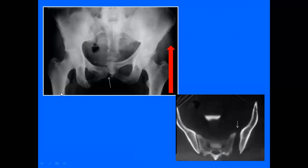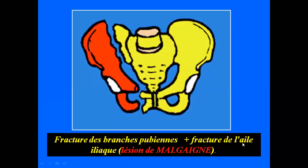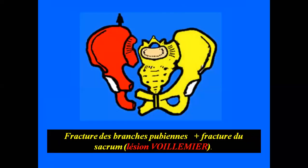Sur cette radiographie et ce scanner, on voit en avant la disjonction de la symphyse pubienne, les deux bords n'étant plus au même niveau — témoignant d'une ascension de l'hémi-bassin gauche. On décrit dans ce cadre la lésion de Malgaigne, qui associe fractures des branches pubiennes et fracture de l'iliaque du même côté, et la lésion de Voilemier, qui associe une fracture des branches pubiennes d'un côté et une fracture du sacrum du même côté.